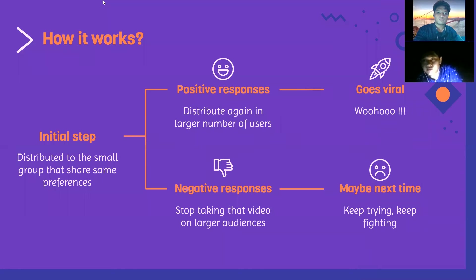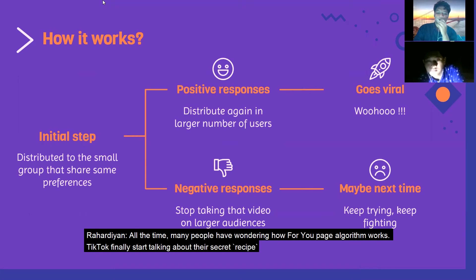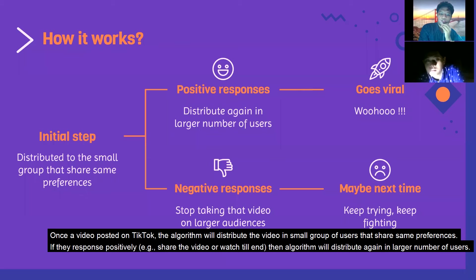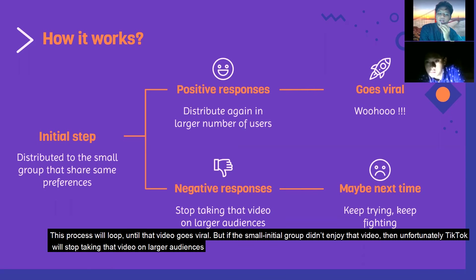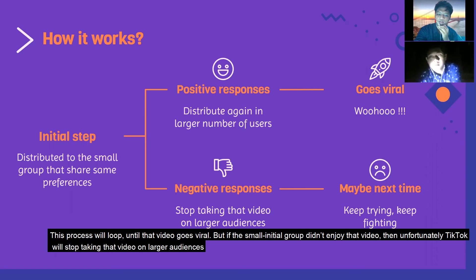Many people have wondered how the For You Page algorithm works. Once a video is posted on TikTok, the algorithm distributes it to a small group of users that share similar preferences. If they respond positively — by liking, sharing, or watching till the end — the algorithm distributes it again to a larger number of users. This process loops until the video goes viral. But if the small initial group didn't enjoy the video, TikTok will stop pushing that video to larger audiences.